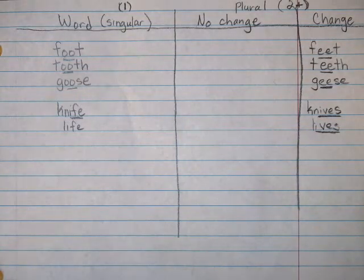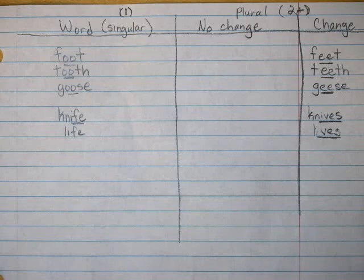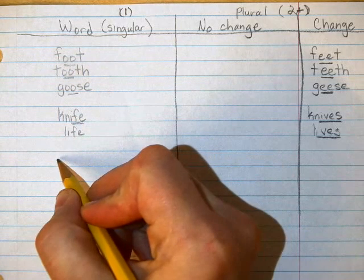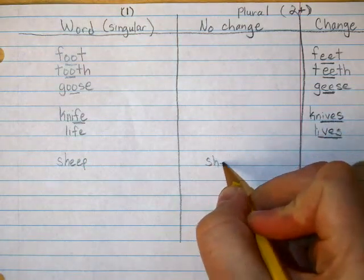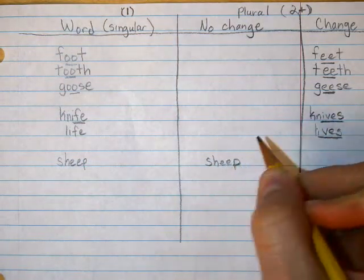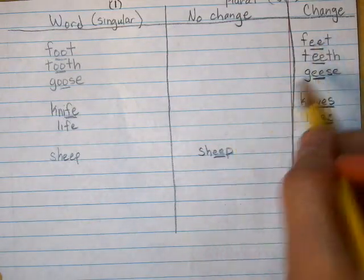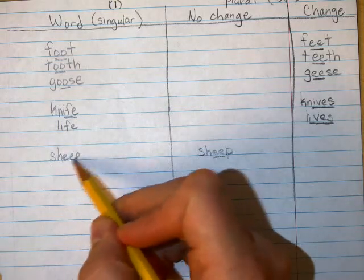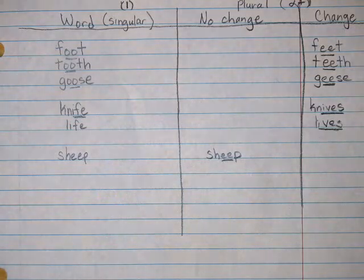I'll give you one more. How about sheep? What happens to sheep? You have one sheep, or you have 16 of these. Here you have one sheep; you have 16 sheep — doesn't change. And look at this: see how it's double E? Still a double E. Kind of fits this pattern, except it's not a double O. But it's kind of the same pattern.